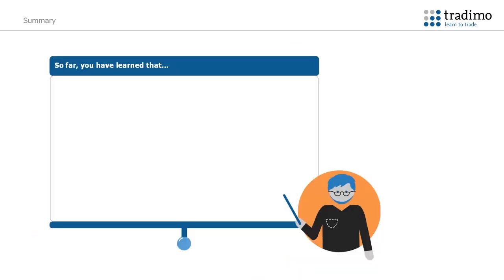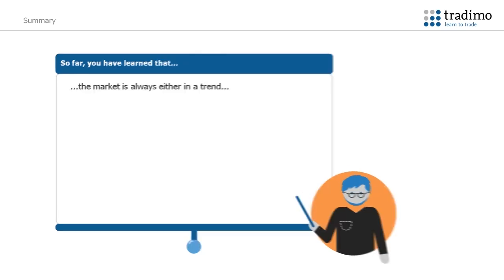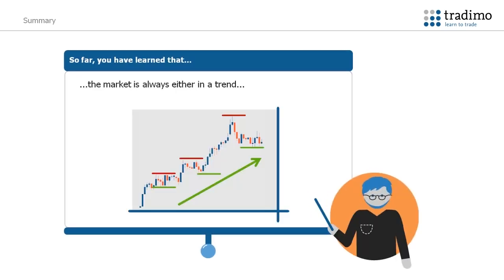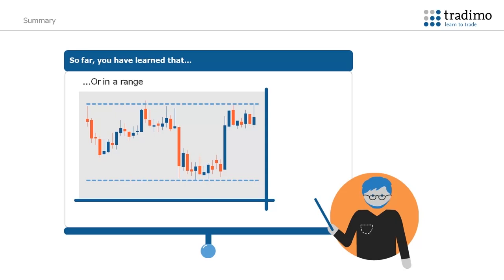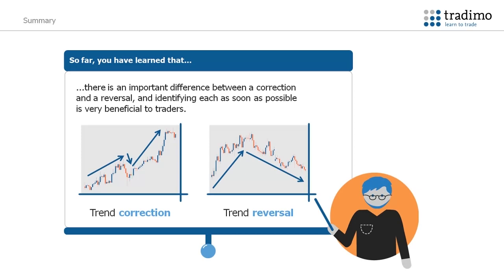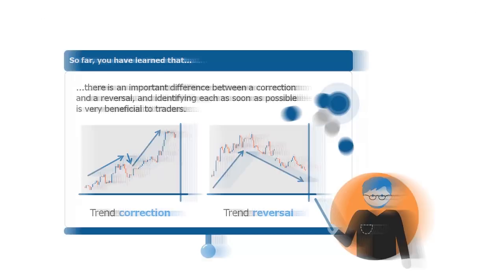This concludes the video about market conditions. So far, you have learned that a market is either trending or ranging. In a trending market, an uptrend can be seen with higher highs and higher lows. A downtrend is seen with a series of lower highs and lower lows. In a ranging market, the market trades between an upper resistance level and a lower support level. There is a difference between a correction and a reversal. A correction is where the market moves in the opposite direction of the trend before continuing on. A reversal is where the market direction changes completely.